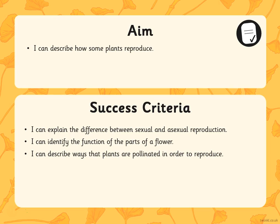Let's go back to the aim at the start of the lesson — we've been describing how some plants reproduce. In your lesson with your class teacher you'll further explore the success criteria to see if you were successful today in achieving the aim. Thank you.